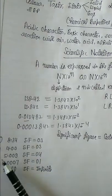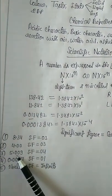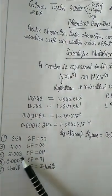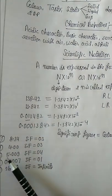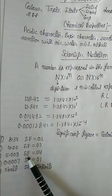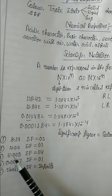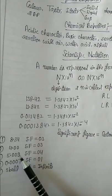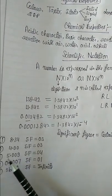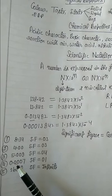Rule number three: all zeros between non-zero digits are significant. For example, 2 zeros between non-zero digits 5 and 9 are significant. So the total number of significant figures is 4 — digits 1, 2, 3, 4.